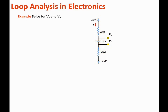We can state that 10 equals the voltage drop across the 2k ohm resistor, which is I times 2k, plus the voltage drop across the voltage source, which is 4 volts, plus the voltage drop across the 6k ohm resistor, which is I times 6k, plus the remaining voltage at the bottom, which is negative 10. This is the loop equation.